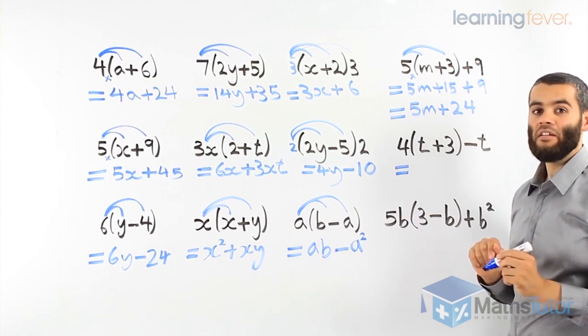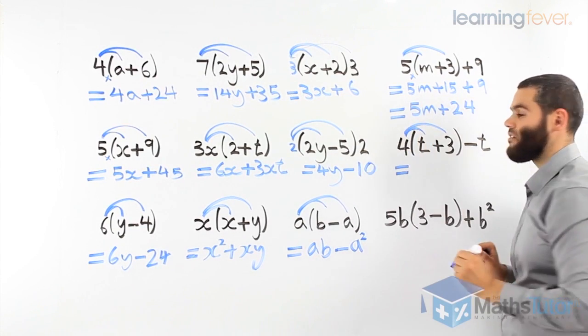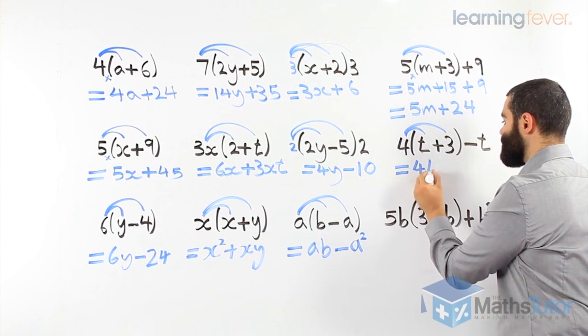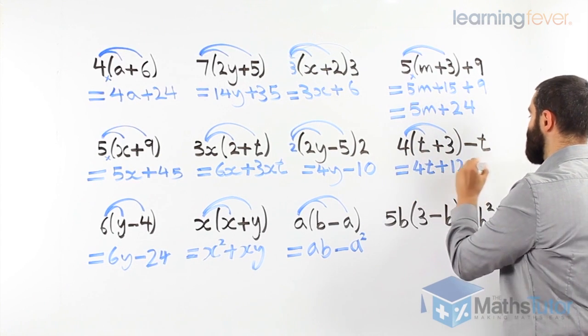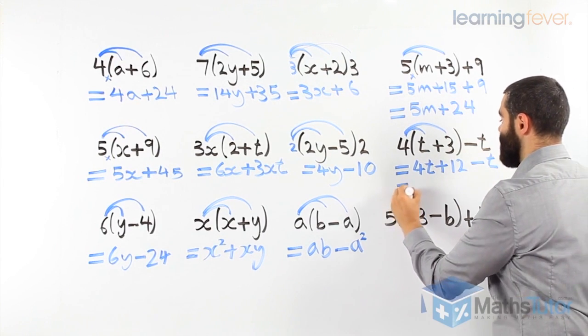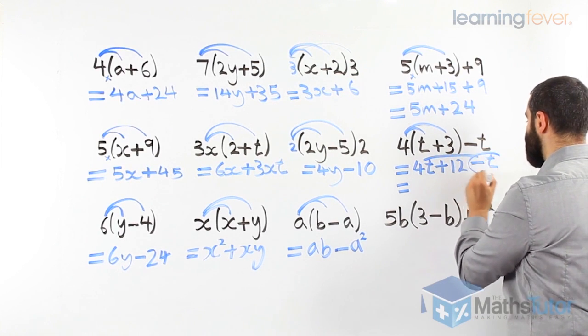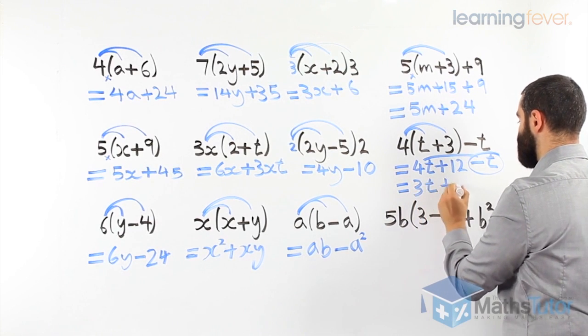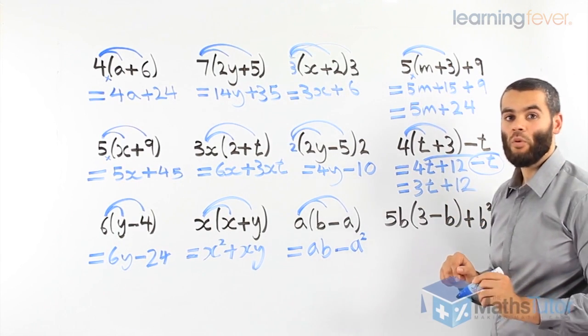Here, again, very similar. We're expanding what's in the brackets. 4 times what's in the brackets only. 4t, plus 4 times 3 is 12, minus the t. We bring it down to see if we can simplify any further. In this case, we can. 4t, minus t, which becomes 3t, plus 12. Our final answer, 3t, plus 12.